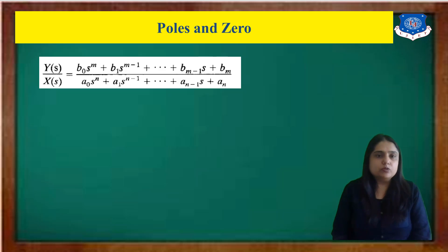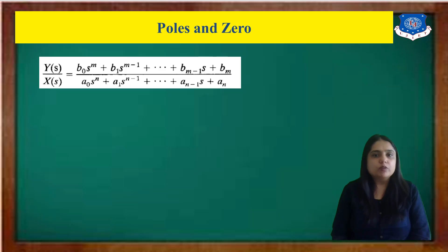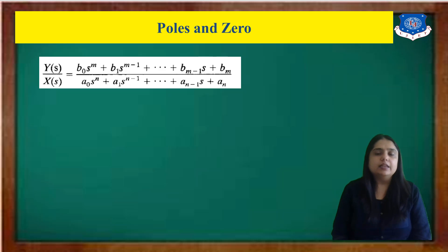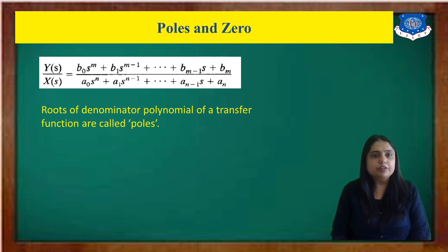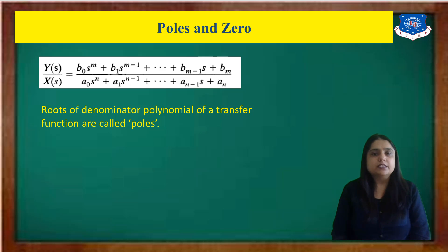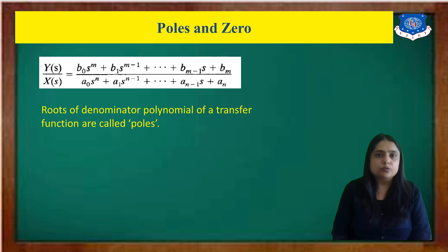The general form of the transfer function becomes: b₀sᵐ + b₁sᵐ⁻¹ + ... + bₘ₋₁s + bₘ, divided by a₀sⁿ + a₁sⁿ⁻¹ + ... + aₙ₋₁s + aₙ. To find the poles, we take the denominator polynomial equal to zero — the roots of the denominator are called the poles of the function.